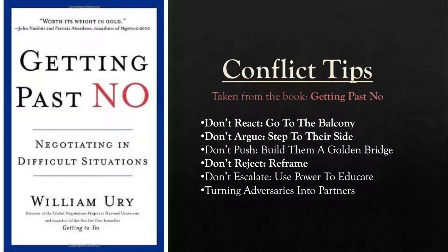For this next section, I'm going to give some tips on conflict resolution from an excellent book I highly recommend: 'Getting Past No: Negotiating in Difficult Situations' by William Ury. I'll include a link to the concise PDF version in the description. In his book, there's a lengthy section on techniques to use in conflict or negotiation scenarios: Don't react — go to the balcony. Don't argue — step to their side. Don't push — build them a golden bridge. Don't reject — reframe. Don't escalate — use power to educate. And turning adversaries into partners. I've selected the three most important of these to explain.